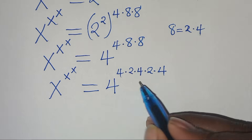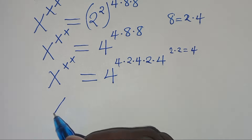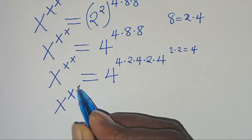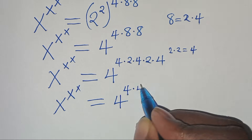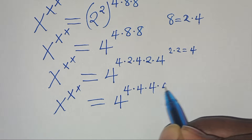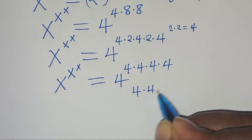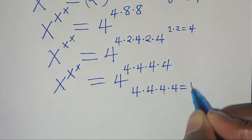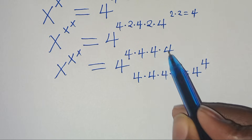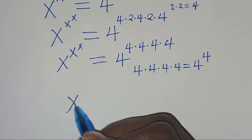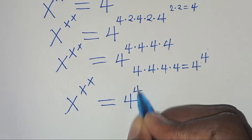Now 2 × 2 = 4, so we have x^(x^x) = 4^(4 × 4 × 4 × 4). Since 4 × 4 × 4 × 4 × 4 × 4 = 4^4, we can substitute to get x^(x^x) = 4^(4^4).